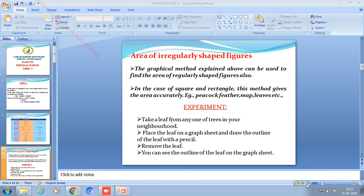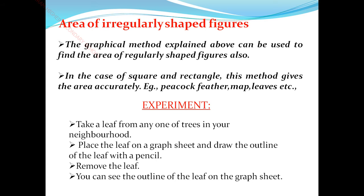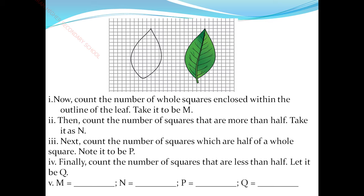We use the graphical method to find the area of irregular shaped figures. As shown in the demo video, we place a leaf on a graph sheet, trace the outline, and then count the number of whole squares enclosed within the outline, called M. Then count the squares that are more than half, noted as N.